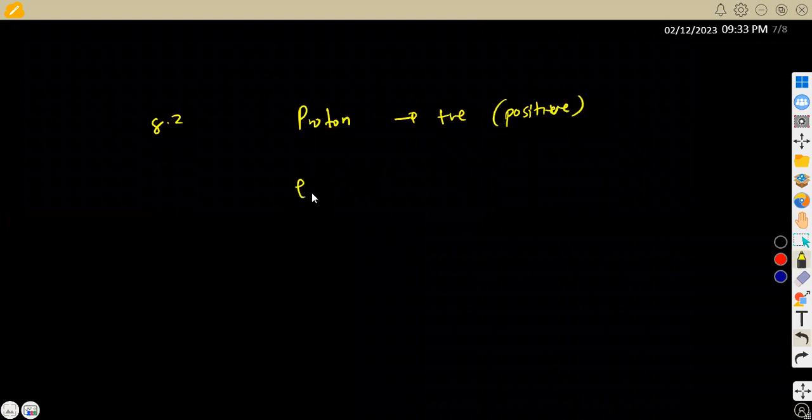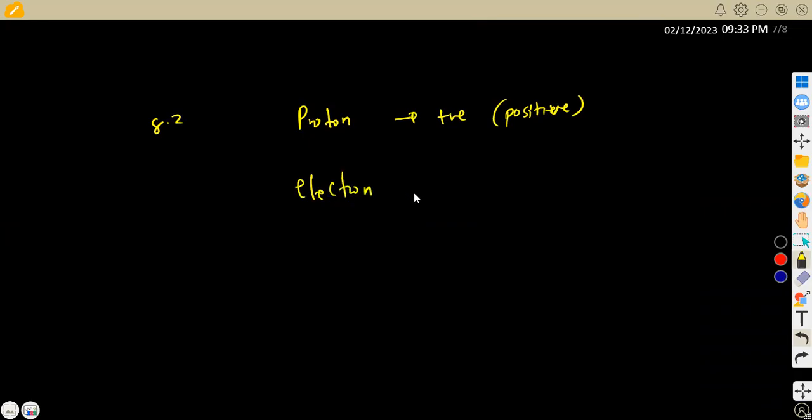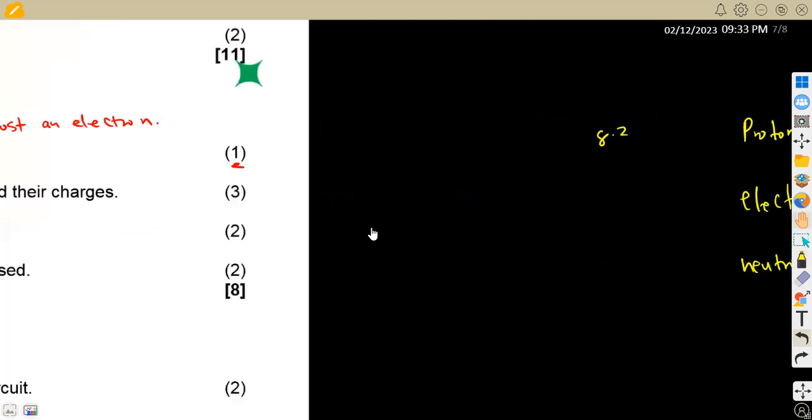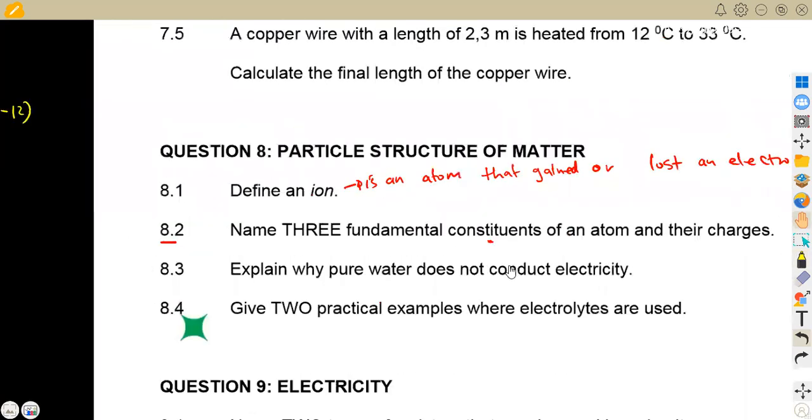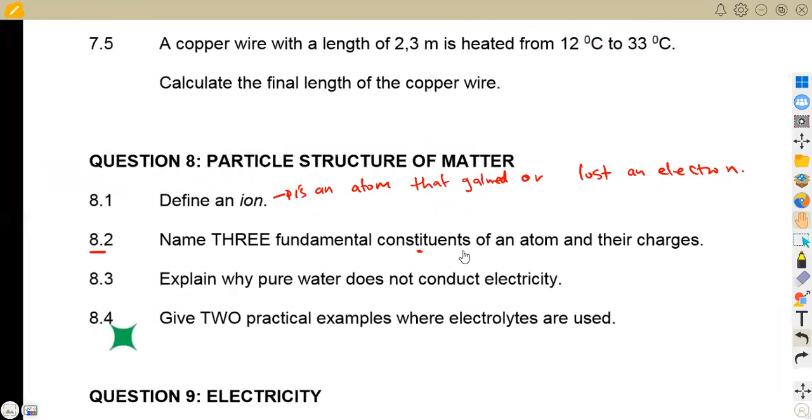Then we have got the electron, and the electron is negative. So that's negatively charged. Then we also have the neutron, which is actually neutral, or there is no charge. So here there is no charge, or we are simply saying it's neutral. So that's what we had on question 8.2.